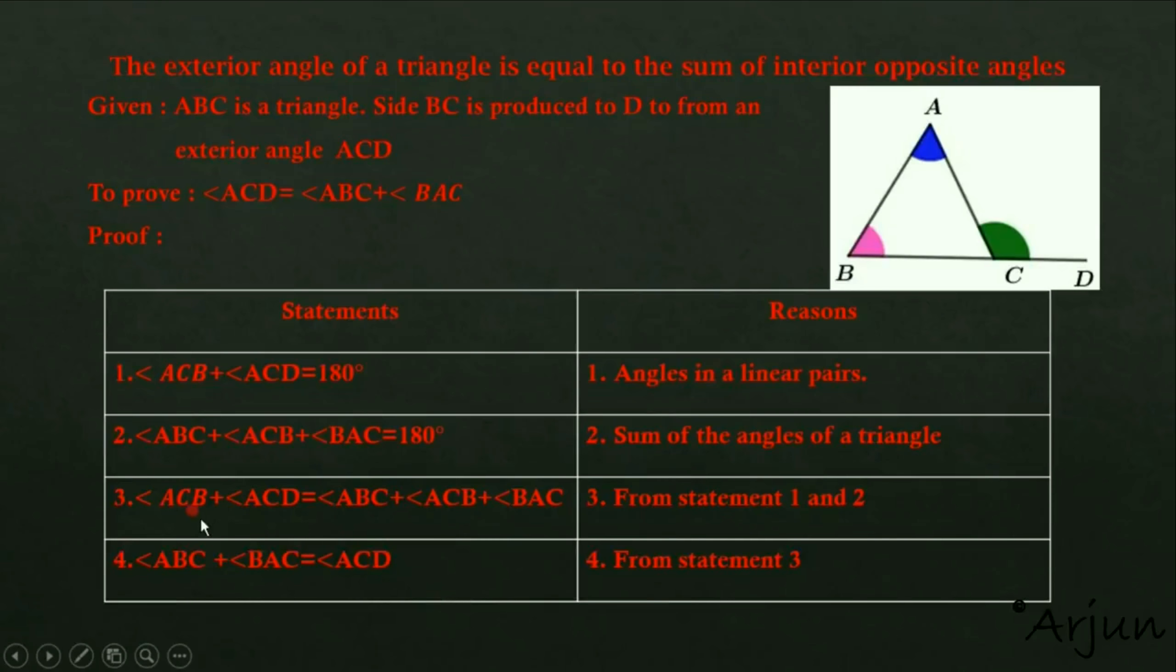This ACB and ACB eliminate each other. What remains is ABC and BAC on one side equals ACD on the other side. This is what we needed to prove. This completes our proof statement. Thank you for watching.